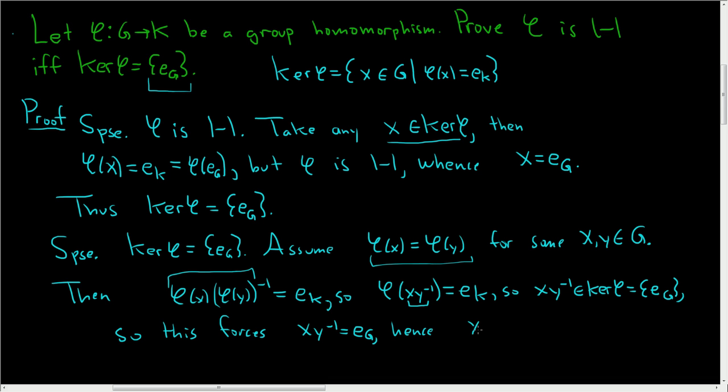Hence x is equal to y. Just multiply both sides of this equation by y on the right and you have x equals y. So we started with φ(x) equal to φ(y) and showed that x was equal to y. That's precisely what it means for φ to be one-to-one.